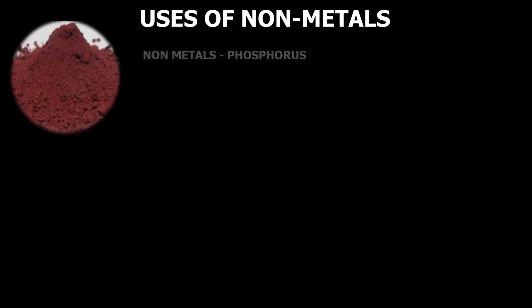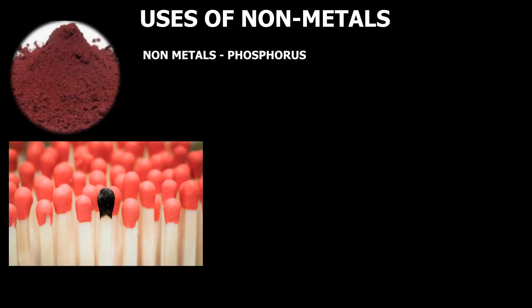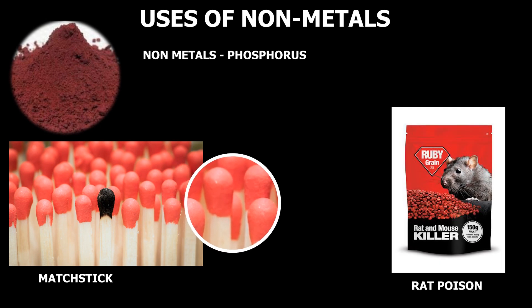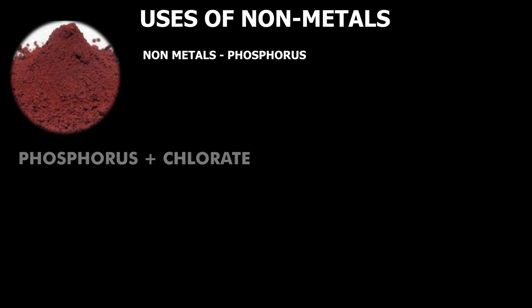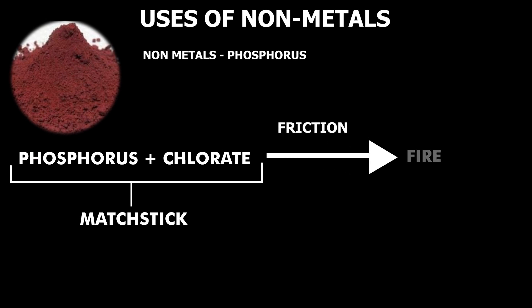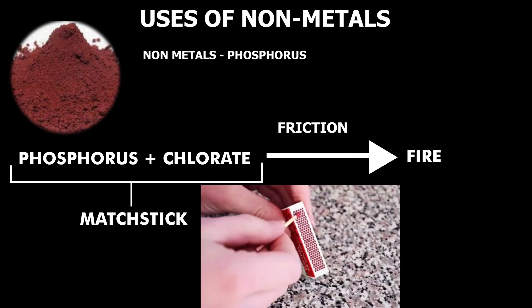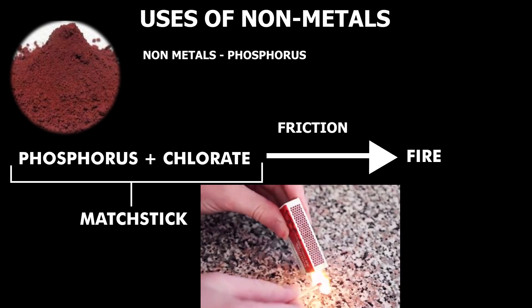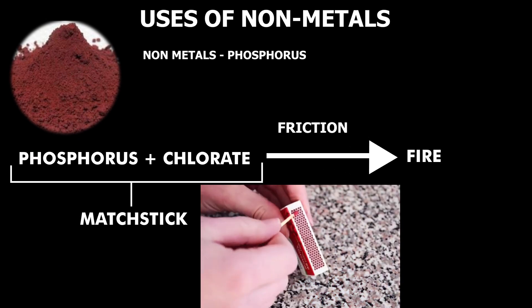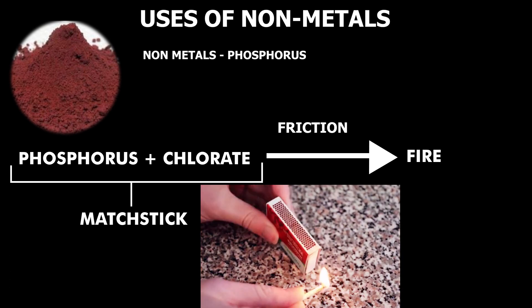Phosphorus is used in matches, rat poison, etc. Match sticks contain phosphorus and chlorate which, on friction, act like an explosive and help the wooden stick to burn.